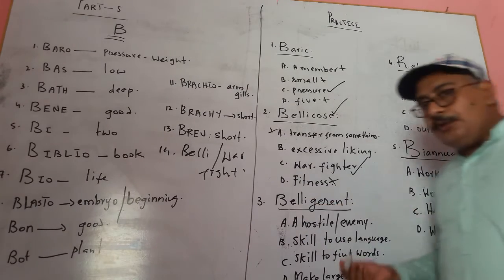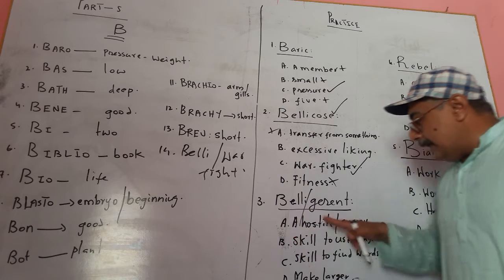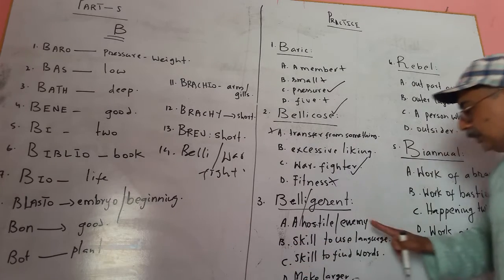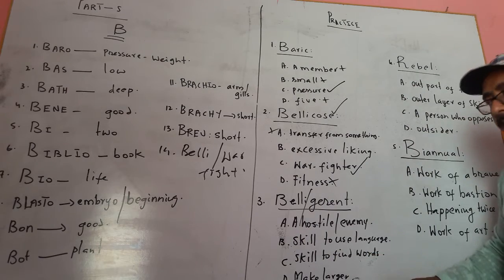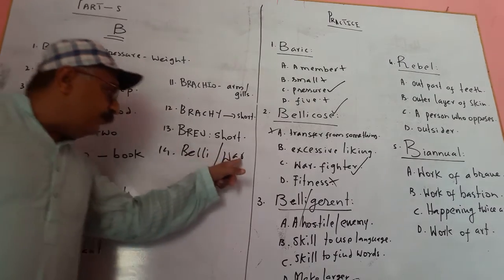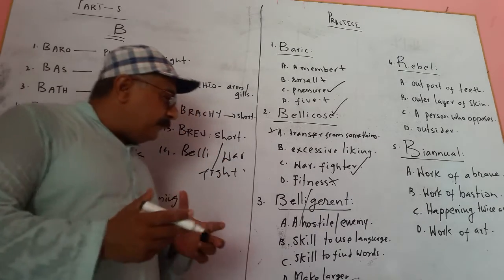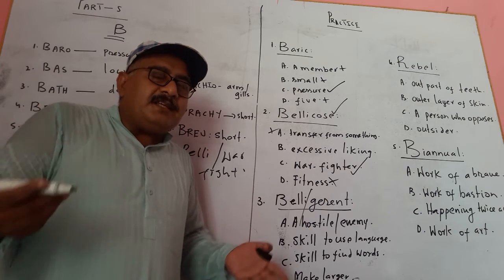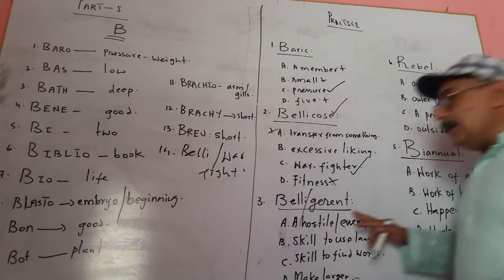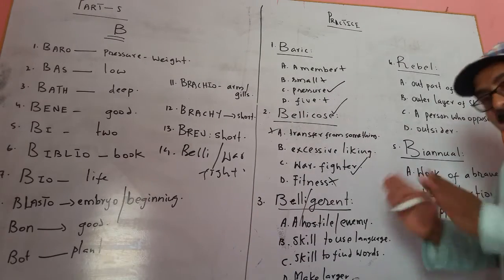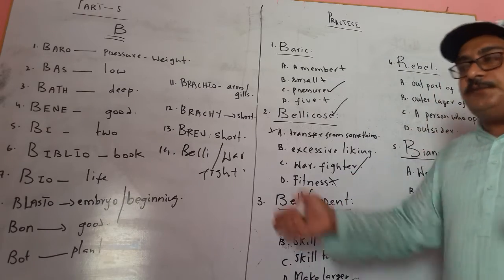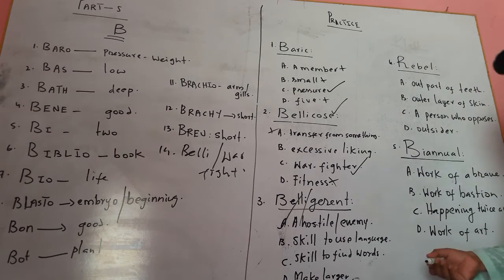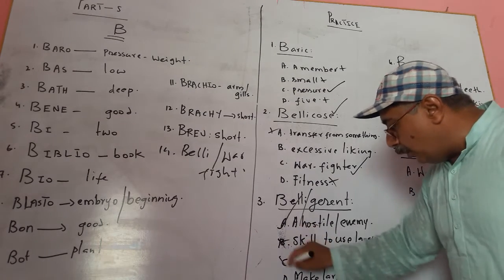Next word: 'belligerent.' We do not know this word, but B-E-L-L-I means war or fight. The options are: A — hostile or enemy; B — skill to use language; C — skill to find words; D — make larger. The sense of 'belligerent' is war or fight. In exam questions, the same word will not be used — a synonym will appear. Why do people fight? Because there is hostility or enmity. So 'hostile or enemy' is the right answer for 'belligerent.' Options B, C, and D are wrong.